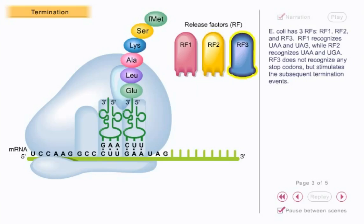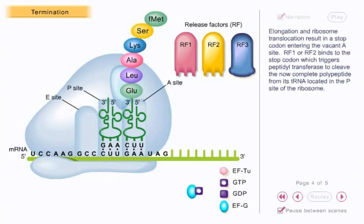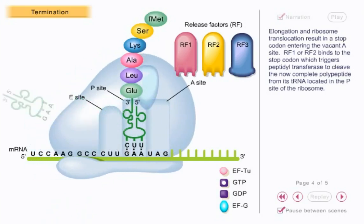RF3 does not recognize any stop codons, but stimulates the subsequent termination events. Elongation and ribosome translocation result in a stop codon entering the vacant A site. RF1 or RF2 binds to the stop codon,